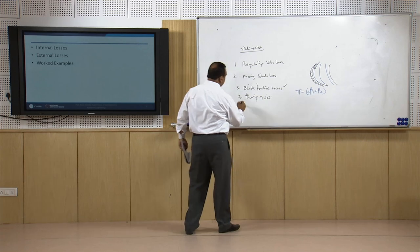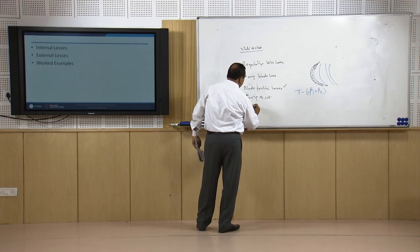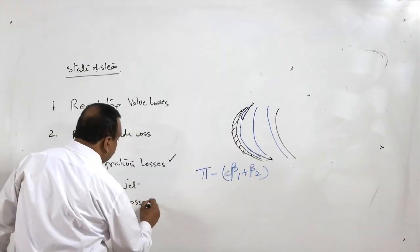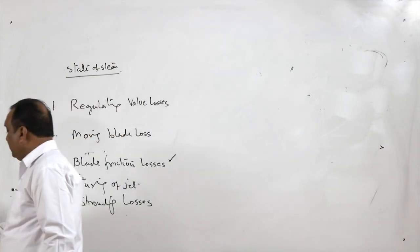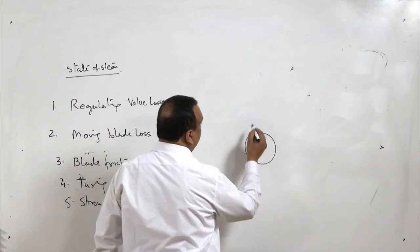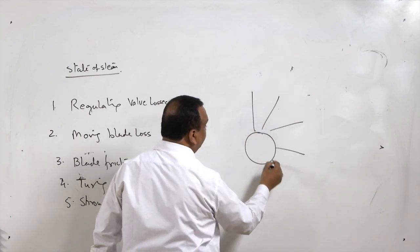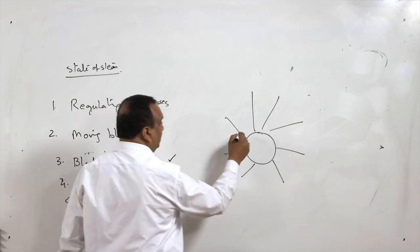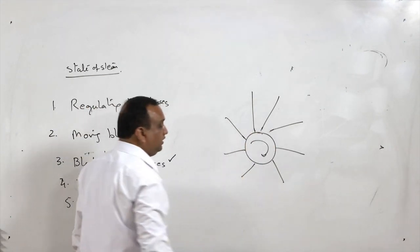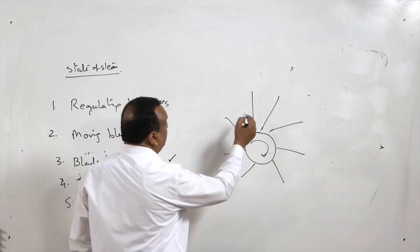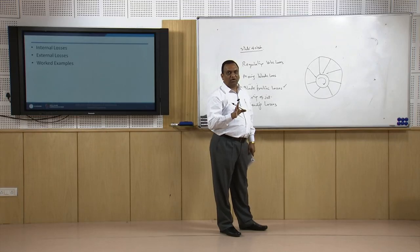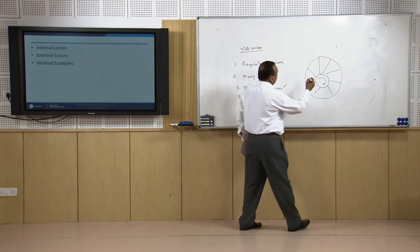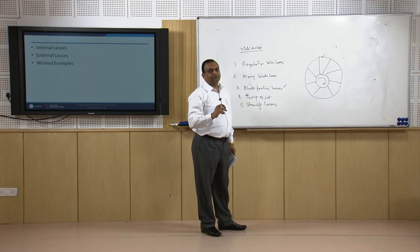Shrouding losses also occur in turbines. In turbines, shrouding is done — if we look at the end view of the turbine, there are a number of blades attached to the rotor, and the rotor is moving with a certain rotational speed. These blades are tied together with the help of shrouding. This shrouding causes interruption in the flow, and the presence of shrouding also contributes towards losses during flow in the turbine.